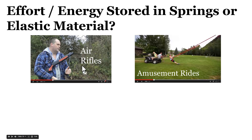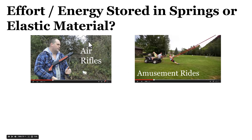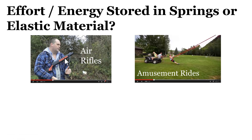Here are two examples of storing effort or energy in a spring which can be used later. The first example is an air rifle. That barrel gets pushed down and compresses a spring inside the stock, and that's used to shoot a pellet or a BB. That stored effort, or stored energy, then goes to accelerating and shooting that BB.